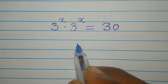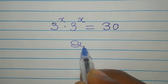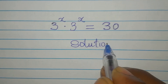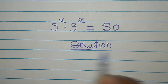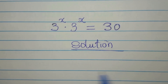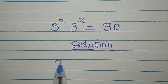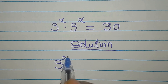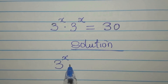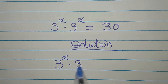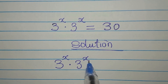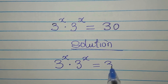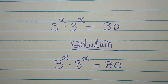Hi everyone. Let's provide the solution to this equation: 3 to the power of x multiplied by 3 to the power of x equals 30.